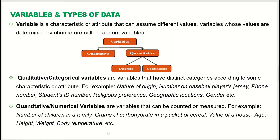Similarly, age, height, weight, and body temperature are all pure numbers, so they are quantitative or numerical variables. In this section we saw the definitions and examples of qualitative or categorical variables and quantitative or numerical variables.